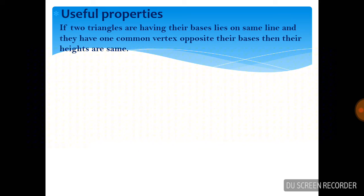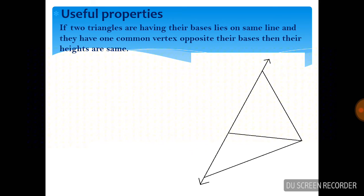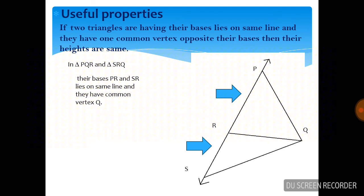For this we will draw a figure. Here there are two triangles: triangle PRQ and another triangle SRQ. Their bases — the first triangle PRQ has base PR, and the other triangle SRQ has base SR. These bases lie on the same line. Since bases PR and SR lie on the same line and they have common vertex Q, therefore they have a common height.